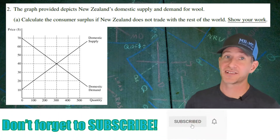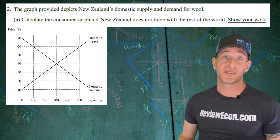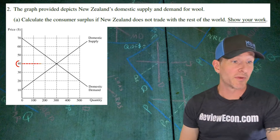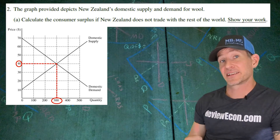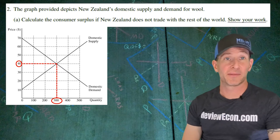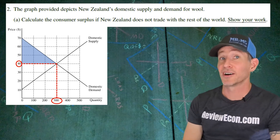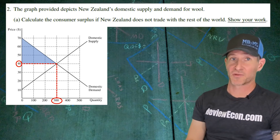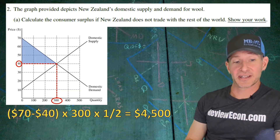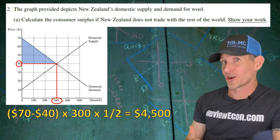For this question, we're given a graph that shows New Zealand's supply and demand for wool. For part A, we're going to calculate the consumer surplus if New Zealand does not trade with the rest of the world. If New Zealand doesn't trade, the domestic equilibrium price will be $40 and the domestic equilibrium quantity will be 300 units of wool. The consumer surplus triangle runs from the price of $40 up to the demand curve. The height is $70 minus $40, the base is 300 units, times one-half — that gives us $4,500. If you got that right with shown work, you get yourself a point.